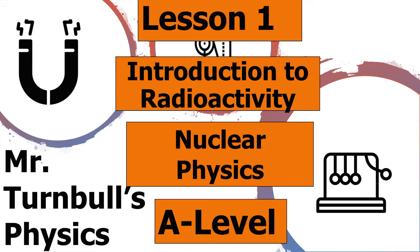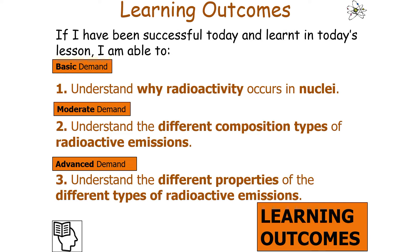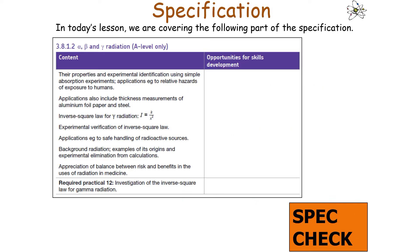Hello and welcome to this lesson on introduction to radioactivity, which is part of the nuclear physics topic in AQA A-level physics. In today's lesson we're going to introduce ourselves to radioactivity by looking at understanding the properties of radioactive emissions, linking into AQA A-level physics specification 3.8.1.2 on alpha, beta and gamma radiation.